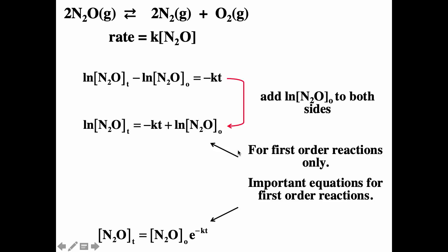These equations are all important. This equation here you should recognize as the equation for a straight line. If you plot the natural log of the concentration as a function of time, you get a straight line with a slope of minus k — that is, y equals mx plus b. The y-intercept is the natural log of the initial concentration. The other key equation shows that for a first order process, the concentration goes down exponentially as a function of time.